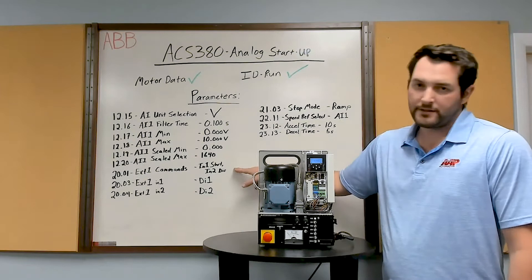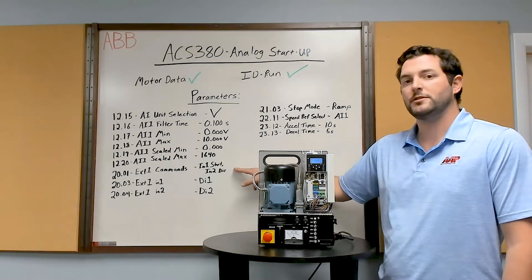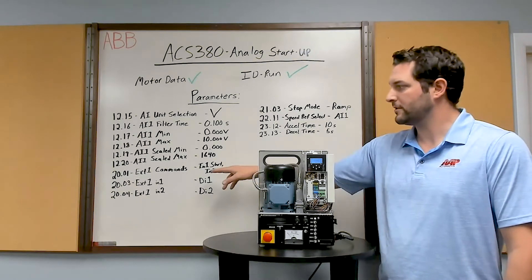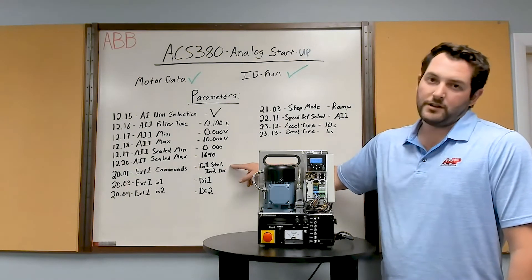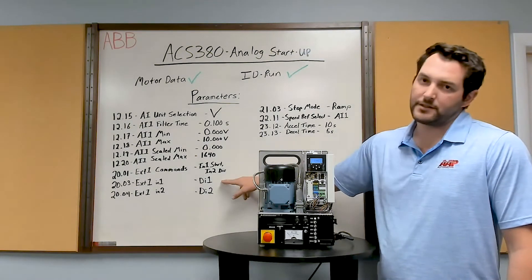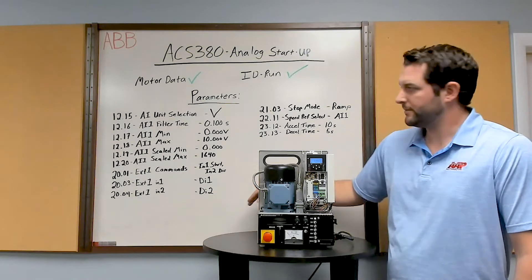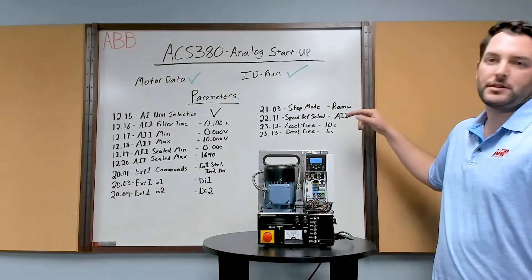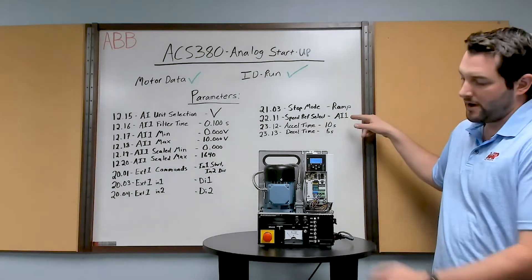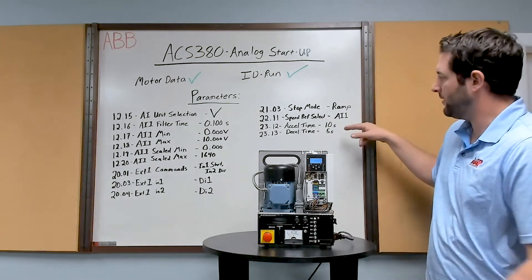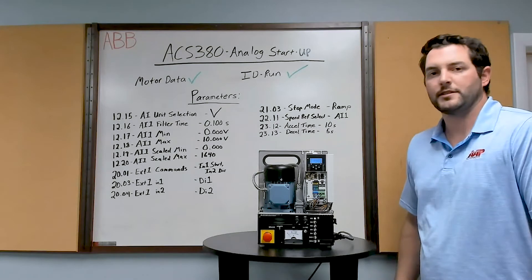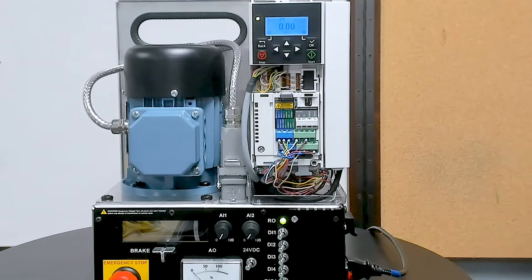Then we go down to our external commands — you can program multiple external commands, but since we're just doing a single analog input this time, we're only going to use the first one. We're going to use one to start and two to change the direction of the motor, and we assign those to digital input one and digital input two. Then we come over to our stop mode and we're just going to use the ramp — you can also use coast. Speed reference is analog input one. Our accel time is 10 seconds and our decel time is five; those can be adjusted to fit your application.